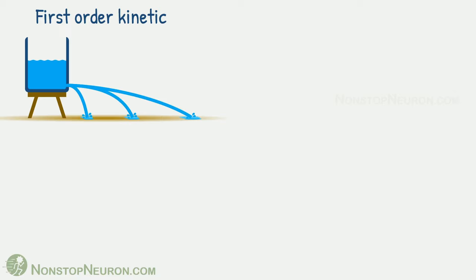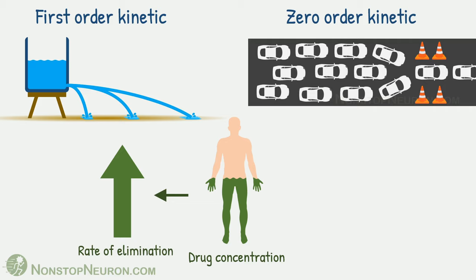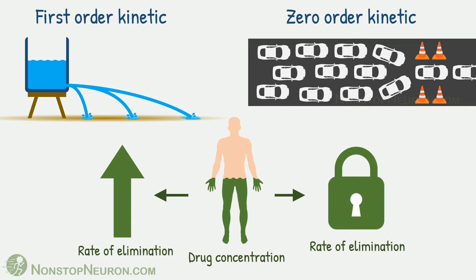In a nutshell, first order kinetics is like water moving out of a hole at the bottom of a container — the rate of drug elimination is proportional to its concentration in the body. And zero order kinetics is like cars moving through a road block — the rate of elimination is constant irrespective of its concentration.